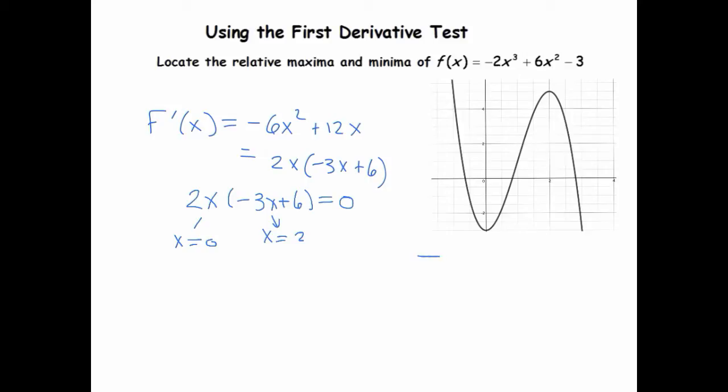And so then I would strongly recommend making your f prime number line. So the critical points need to go on this number line, 0 and 2. And now we'll want to plug in values that are in between, or that are basically just not 0 and 2, so we can find out what the derivative is doing.